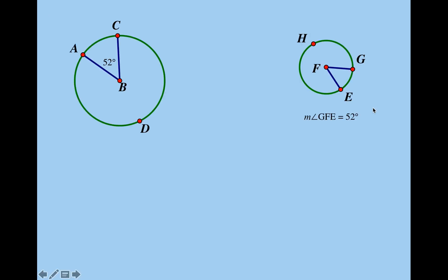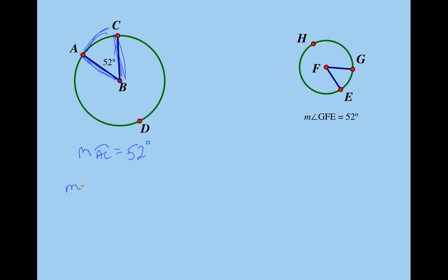Let's talk about measuring arcs. The measure of an arc is the same as the measure of the central angle. The central angle is the angle that comes from the center of the circle, and the two sides of the angle are radii of the circle. So if the central angle is 52 degrees, the measure of arc AC is 52 degrees. The measure of the major arc ADC would be 360 minus 52, which is 308 degrees.